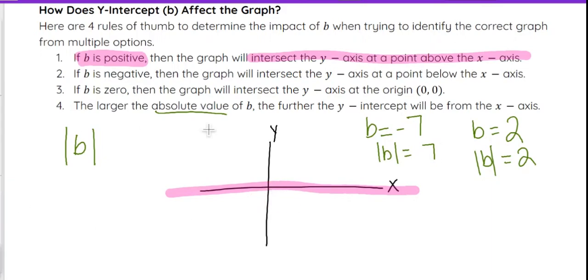And that's going to tell you where it is in reference to the x-axis. So for example, if we have a b value of negative 7, that's going to be further away from the x-axis than a b value of 2.